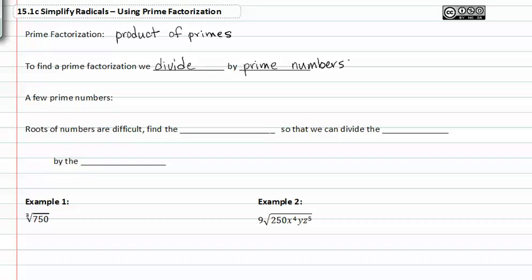Here are a few prime numbers just to refresh your memory: 2, 3, 5, 7, 11, 13, 17, 19, and the list goes on and on.